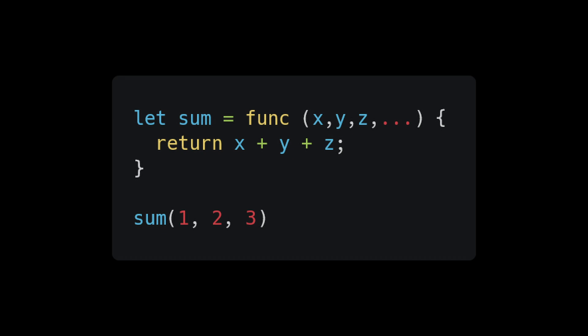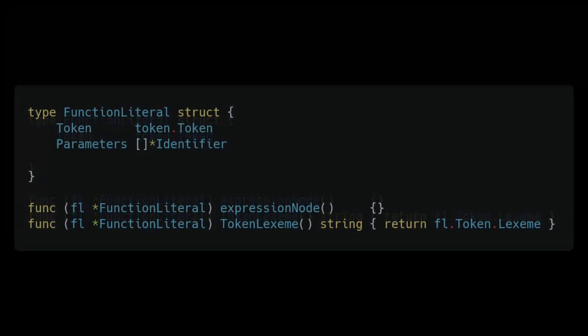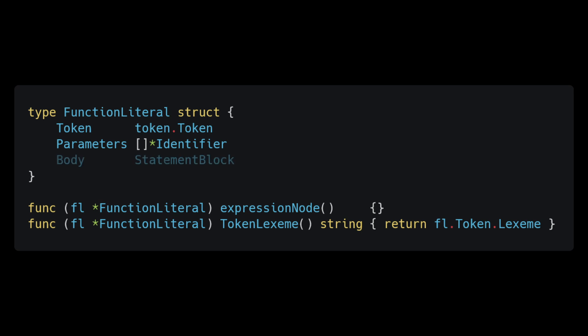Open up your AST package and write the function literal node. We will store a token referencing the func keyword. We will then store the parameters as a list of identifiers. Lastly, we will keep track of the body inside of a statement block.